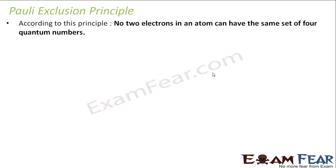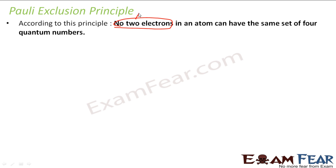Next is Pauli's exclusion principle. The Aufbau principle tells us the order of filling, but how many electrons can be in one orbital was not yet defined. Pauli's exclusion principle states that no two electrons in an atom can have the same set of four quantum numbers.